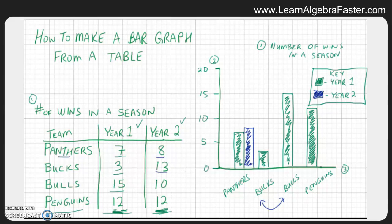The Bulls won 10 games in year two, and the Penguins won 12 games in year two.